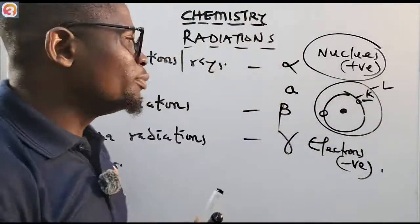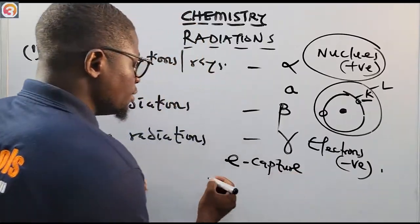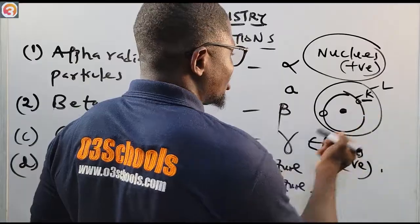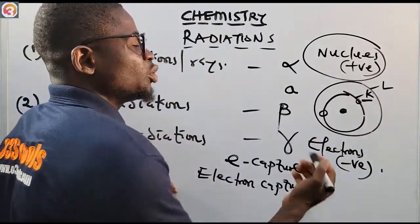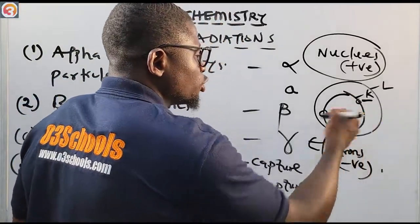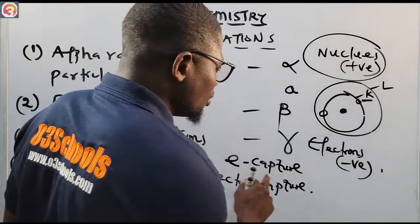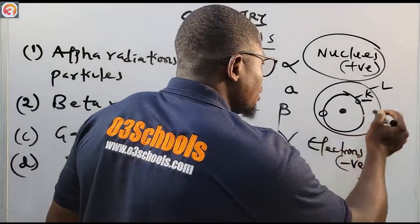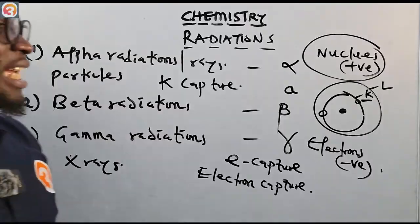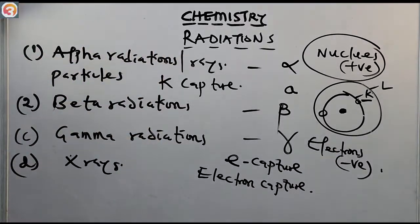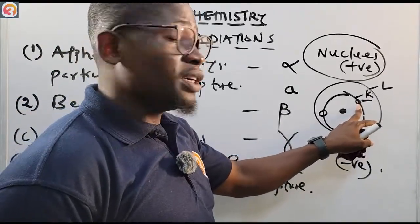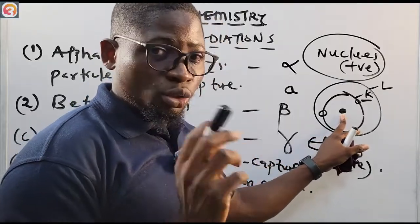When that happens, we call that phenomenon E-capture, which simply means electron capture. When the nucleus attracts the electron from the K shell, we can also call it K-capture. K-capture does not lead to emission of electrons — take note of that.